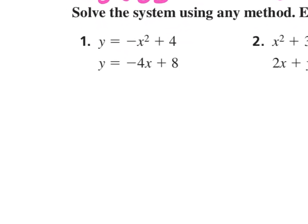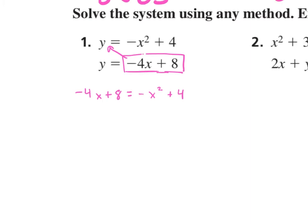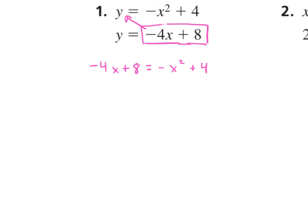Let's look at number 1. We already have y equal to an expression, so we can substitute it in for y right away. We set them equal to each other: negative 4x plus 8 equals negative x squared plus 4. Our goal is to factor, so we need this equal to 0. Moving the x squared over to get a positive x squared: x squared minus 4x, and subtracting 4 on both sides gives plus 4 equals 0.